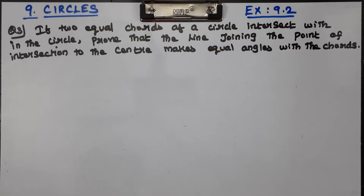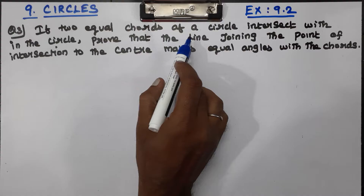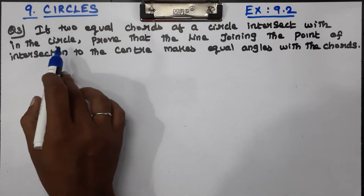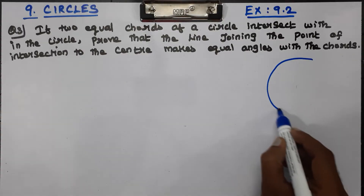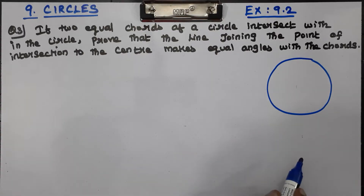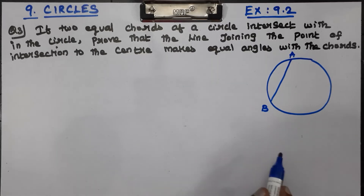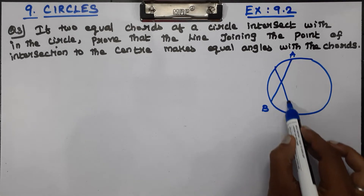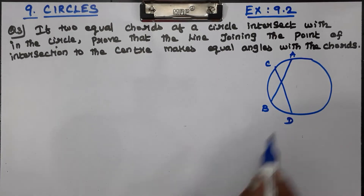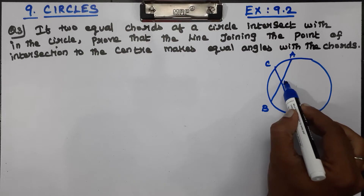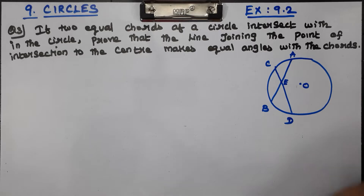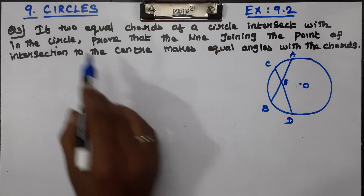This is a small suggestion. In the introduction section, you can see: if two equal chords of a circle intersect within the circle. Now there is a circle, and in this circle two equal chords intersect. We have points A, B, C, D, and an intersected point E.